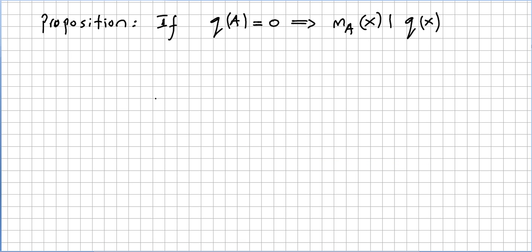Now we are going to review a proposition. This is a very simple proposition. If q(A) equals 0, where A is the operator, then the minimal polynomial, the smallest degree monic polynomial, will divide this q(x).